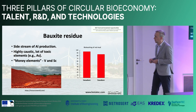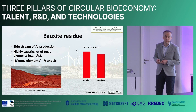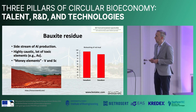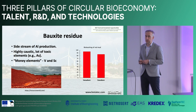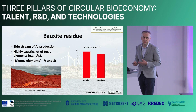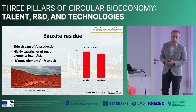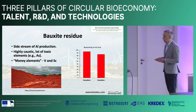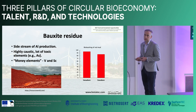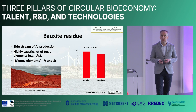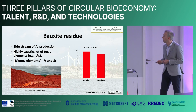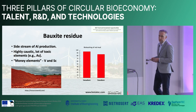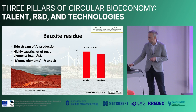Let's look at a few examples and demonstrate what we have achieved at BiotaTech. Bauxite residue, more colloquially known as red mud, is the side stream of aluminum production. It's highly caustic and has toxic elements like arsenic, which means you cannot do anything with it — you have to deposit it and cannot enter it into the circular economy. But there are also valuable elements in there: vanadium and especially scandium. The low price of scandium is only 10 times less than gold. With BiotaTech technology, you can get more than 80% of scandium out as well as more than 90% of vanadium.